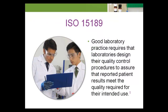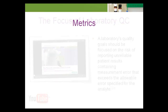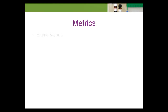Good laboratory practice requires that laboratories design their quality control procedures to assure that reported patient results meet the quality required for their intended use. In previous videos in this series, we argued that a laboratory's quality goals should be focused on the risk of reporting unreliable patient results containing measurement error that exceeds the allowable error specified for the analyte. In this article, we discuss two metrics — sigma values and total error budgets — that can help provide general guidance on how well a laboratory's test system performance and QC procedures align with its specified quality goals.